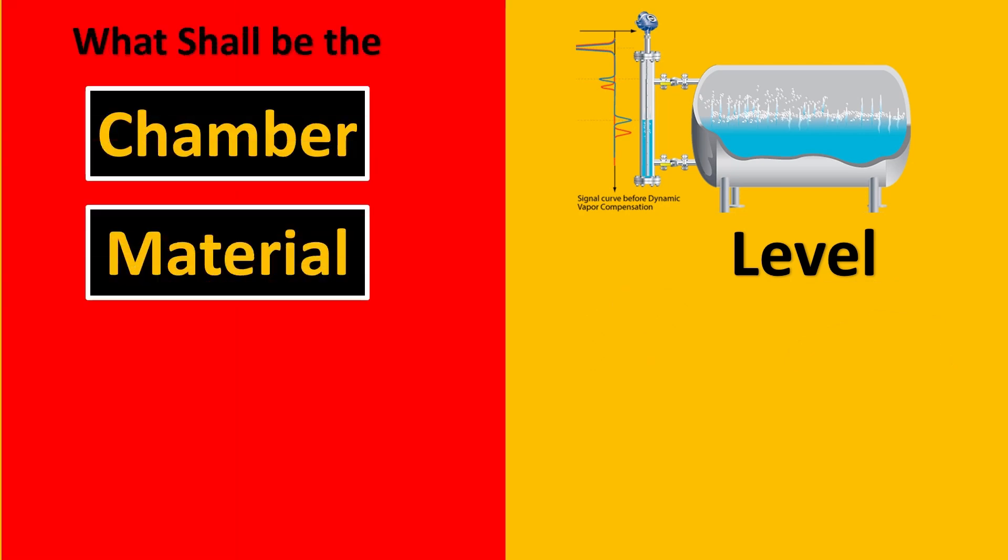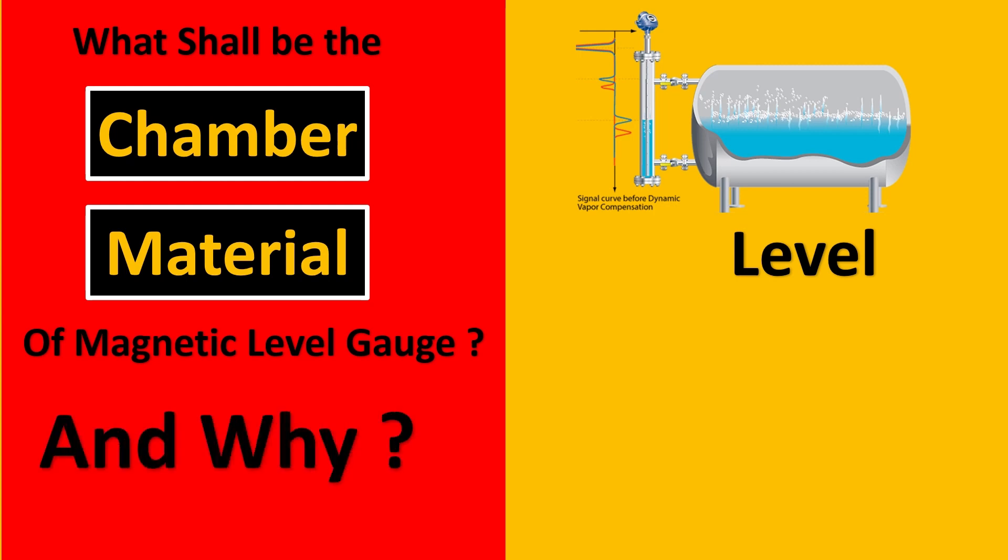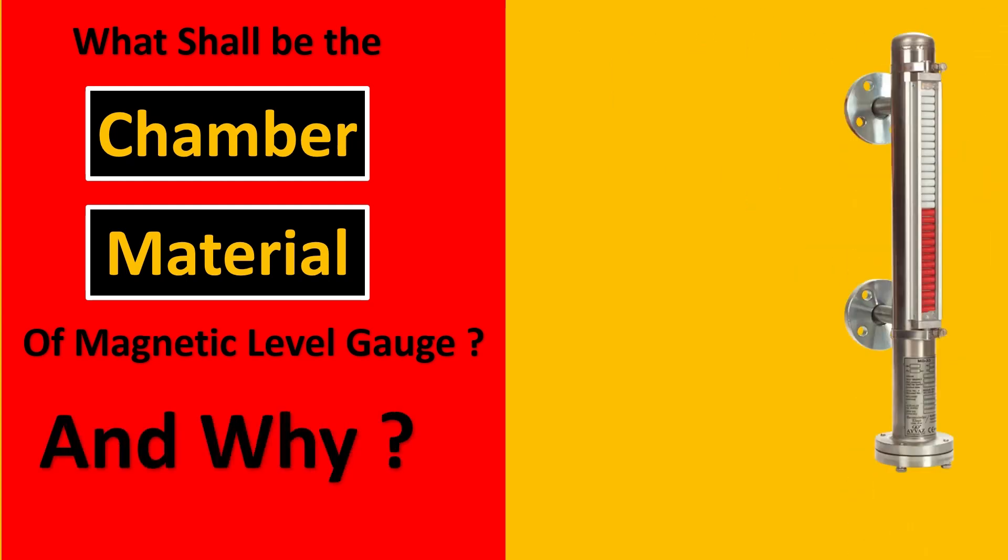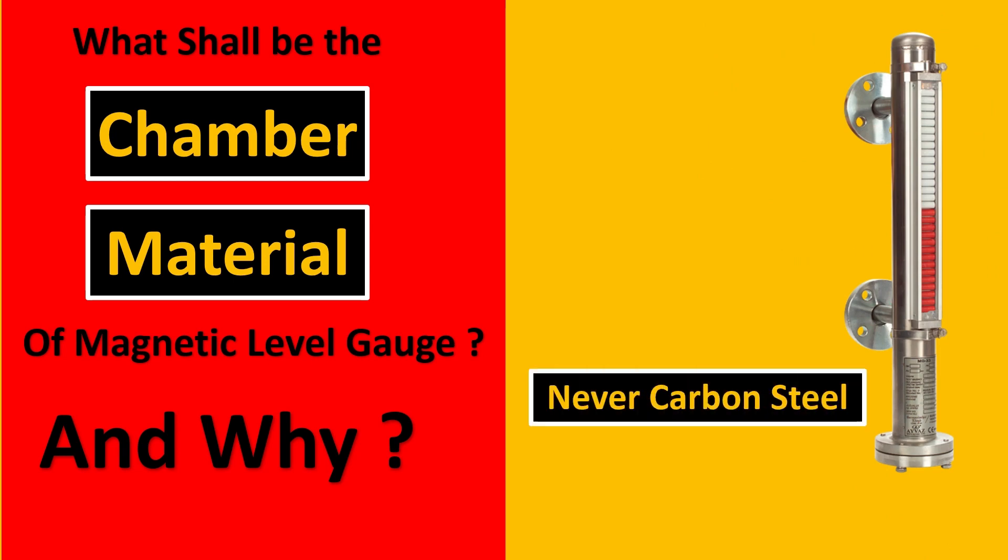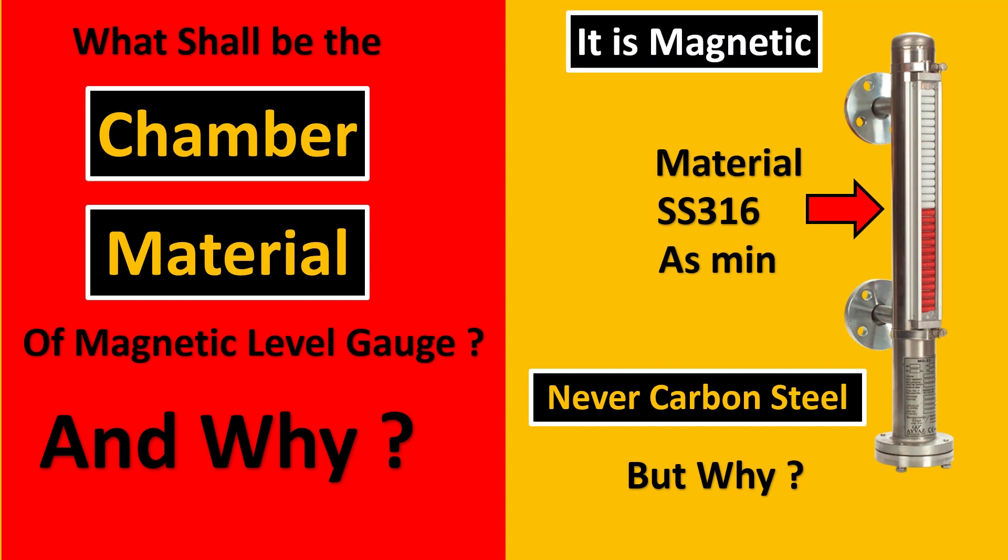First is what shall be the chamber material of magnetic level gauges and why is this special? So in the chamber of magnetic level gauges shall never be carbon steel. The material would be either SS316 as minimum or something higher. Maybe Hastelloy etc but never carbon steel. But why is this case? Because carbon steel is magnetic in nature and can interfere with our measurements. So as instrumentation engineers, we must recommend there should be minimum SS316.